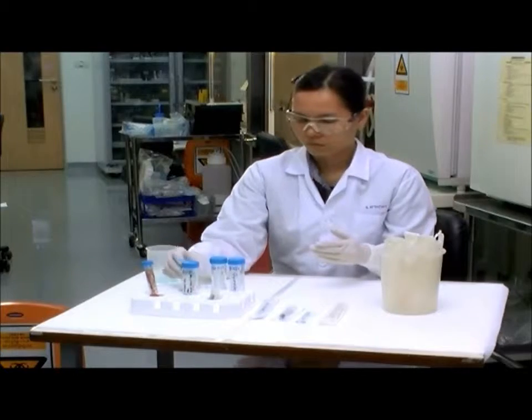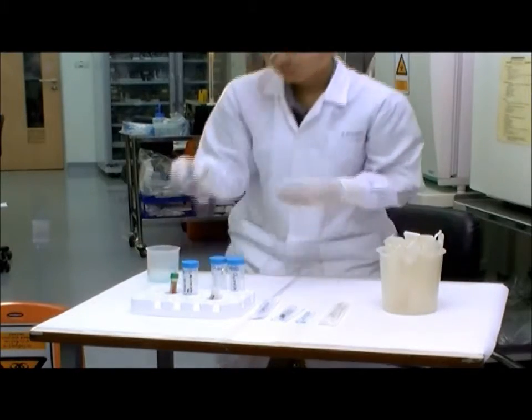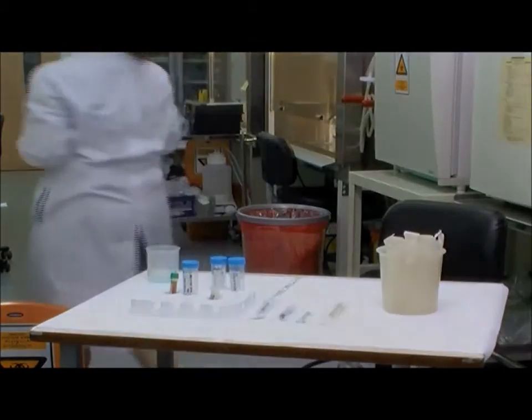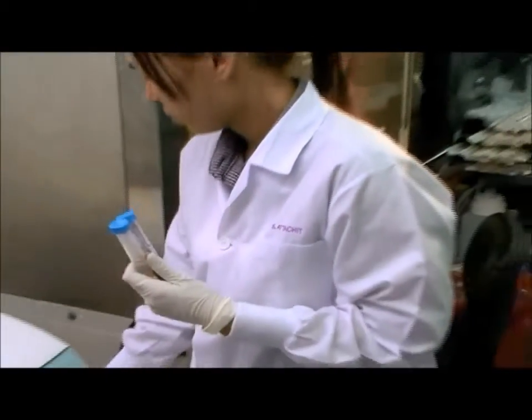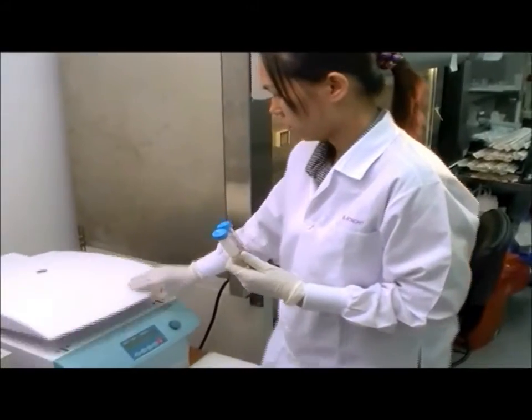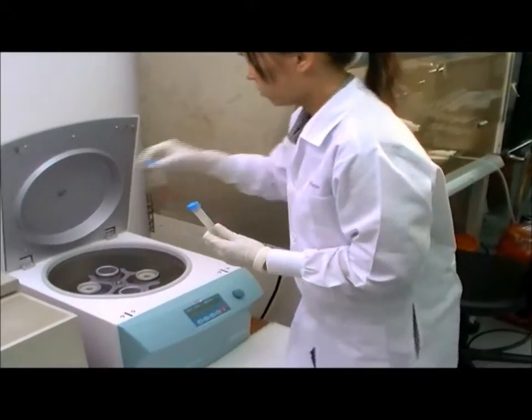Centrifuge the blood at 700 G's or RCF for 5 minutes. If a refrigerated centrifuge is available, perform this and all subsequent centrifugation steps at 4 degrees centigrade. Ensure that the tubes are balanced before centrifugation.